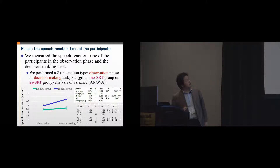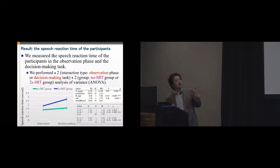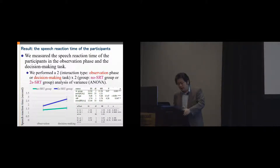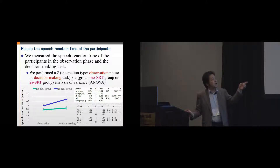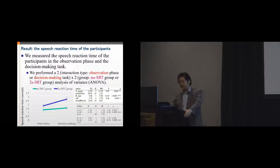For the results, we first measured the speech reaction time of participants in the observation phase and the decision-making task, performing a two-by-two ANOVA. The result shows that the speech reaction time of the two-second SRT group in the decision-making task was significantly longer. This means that the non-SRT agent could keep the participant's speech reaction time short.